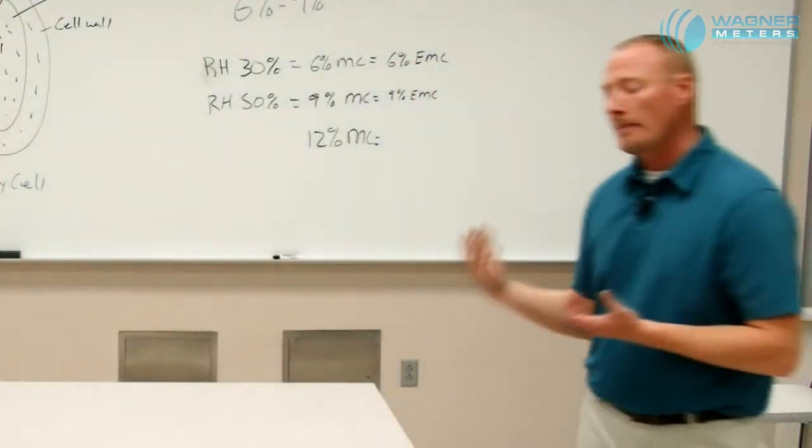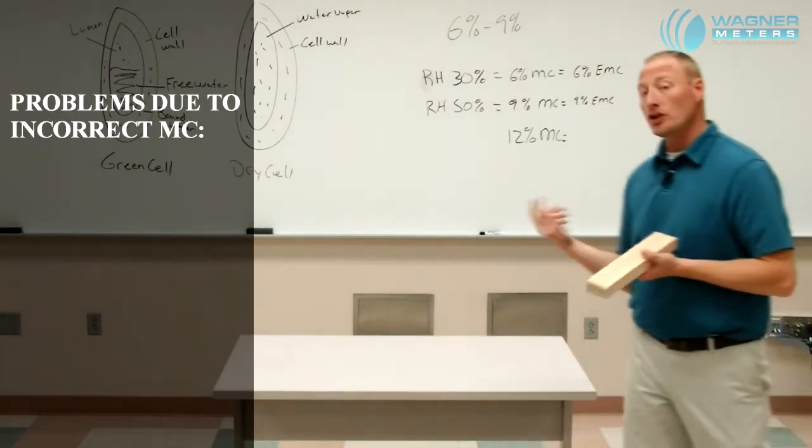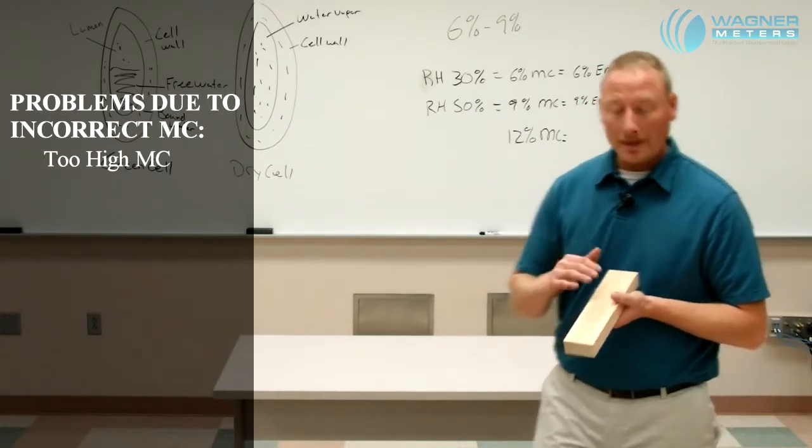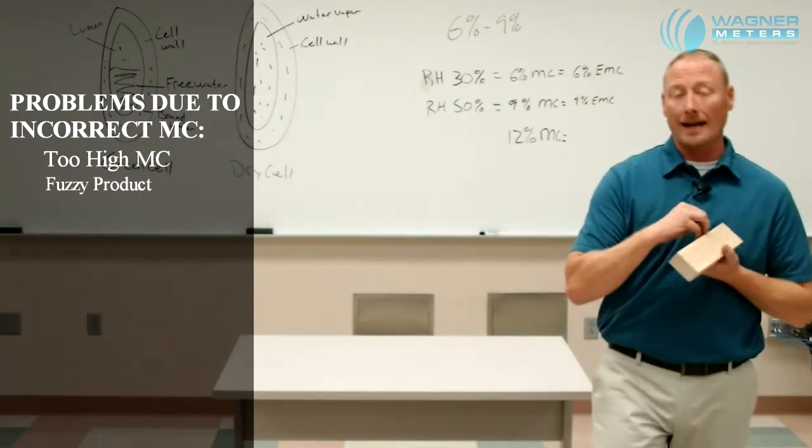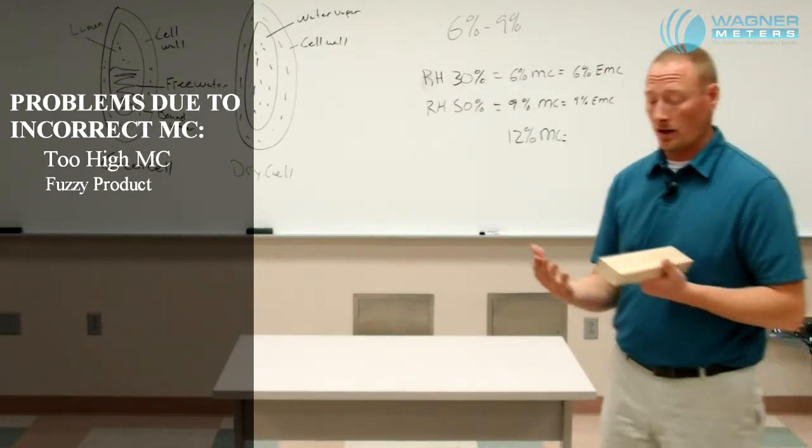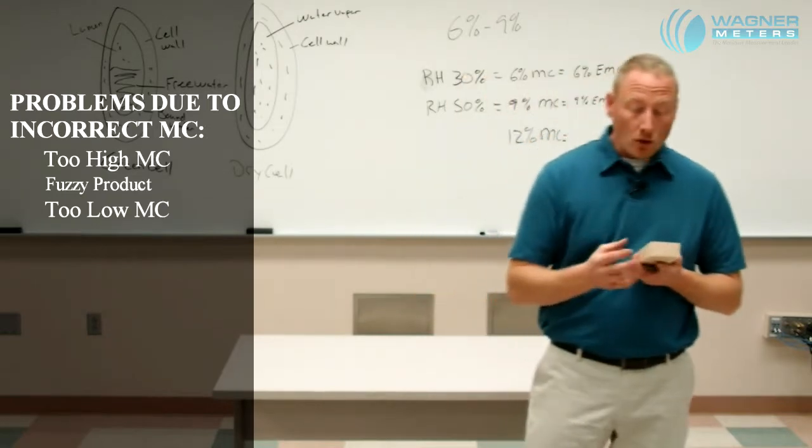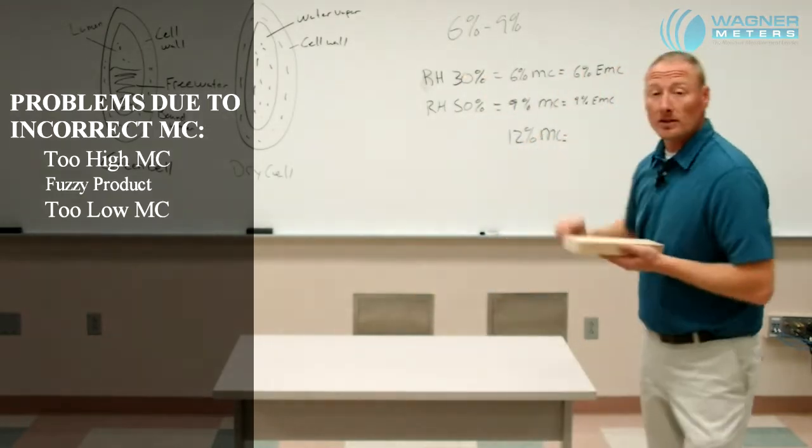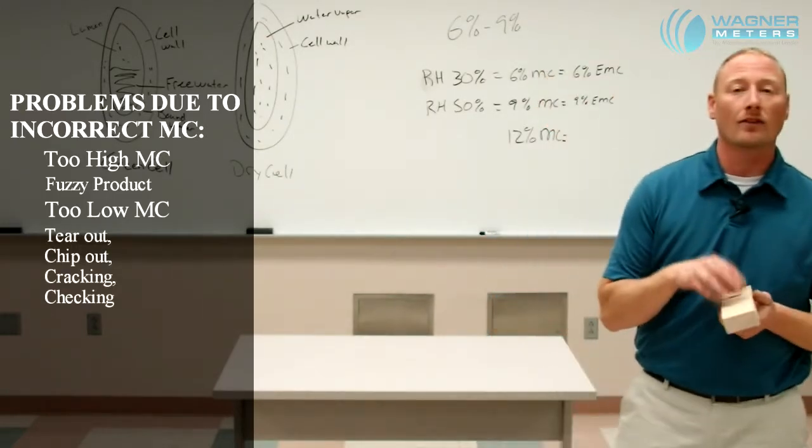What are some problems that can happen if we don't have the correct moisture content when we actually go into the machining process? Well, one of those, if we have too high of moisture content, when we actually machine our product, it can actually create a fuzziness where those wood fibers actually start to release and we get a very fuzzy product. That's with too high of moisture content. If we have too low of moisture content or below our six percent, what can actually happen is we get tear out and chip out of our product.